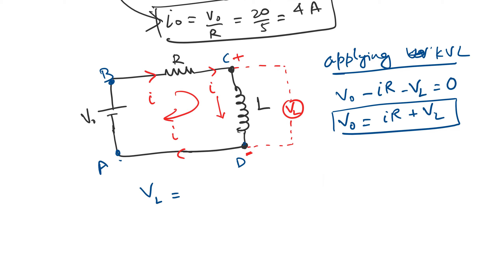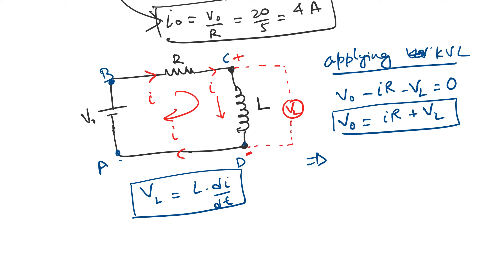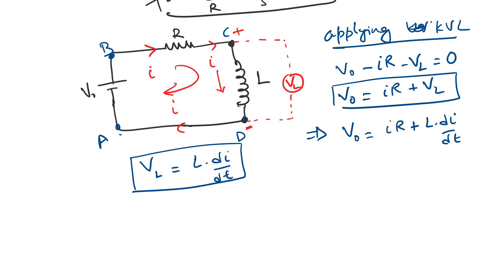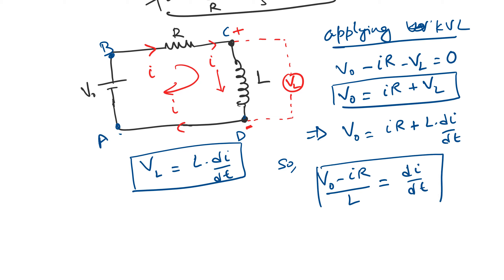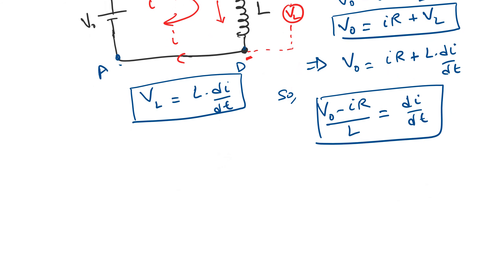We know that the potential across the inductor at any instant of time is given as L times the rate of change of current through the inductor, i.e., VL = L·di/dt. So we can rewrite the equation as V₀ equals IR plus L times di/dt. From here we are getting a differential equation. Rearranging: V₀ minus IR divided by L equals di/dt.